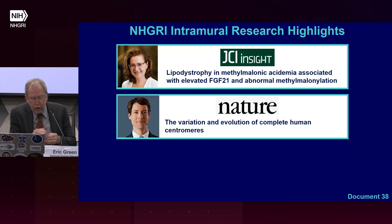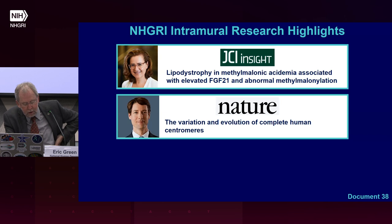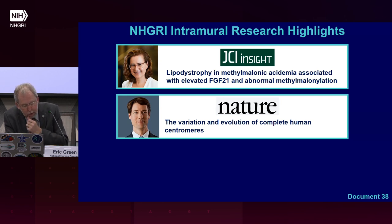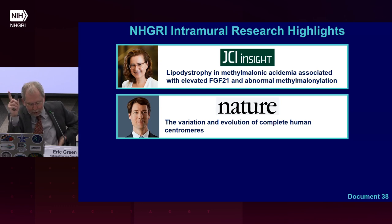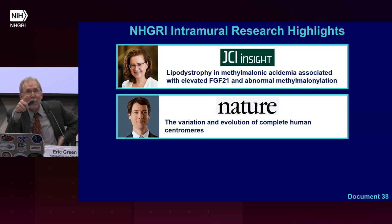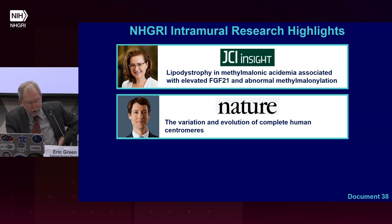Adam Filipi, Sergey Koren, and Sergey Nurk, along with a team of collaborators, provided insights into the evolution and variation of centromeres. The researchers generated a complete set of centromere sequences from a second human genome and found notable variation in the number of certain types of DNA repeats. This paper was rather ironically independently selected by both extramural and intramural staff as a highlight — nicely illustrating an intramural-extramural collaboration involving NHGRI-funded investigators in both programs.